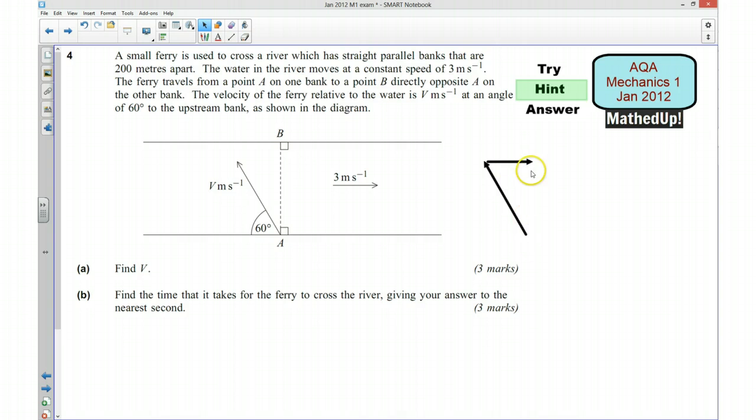And that should give me my resultant vector here. I also know the angle here. So I should use all the information that I've got there to work out what V is using trigonometry.